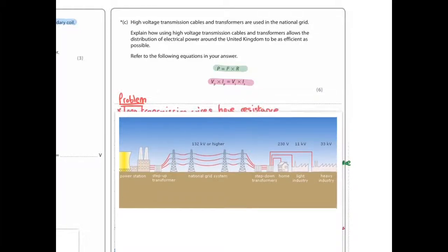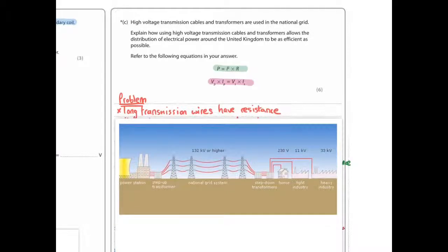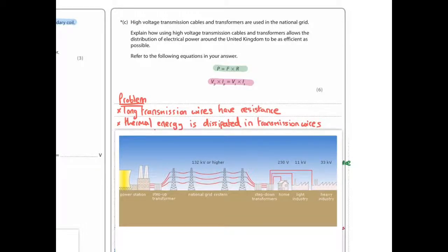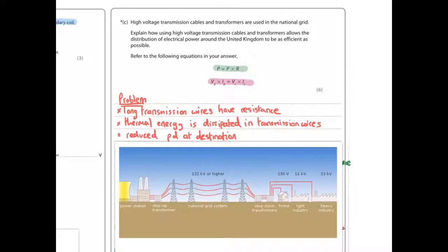Well firstly the problem is long transmission wires have resistance. Thermal energy is dissipated in transmission wires. So you get energy lost as heat. So dissipated means basically is spread out to the environment.